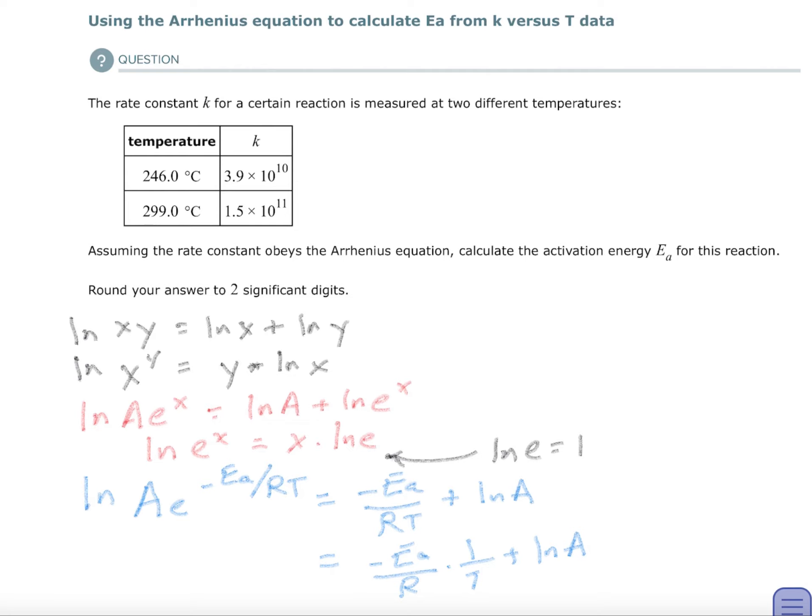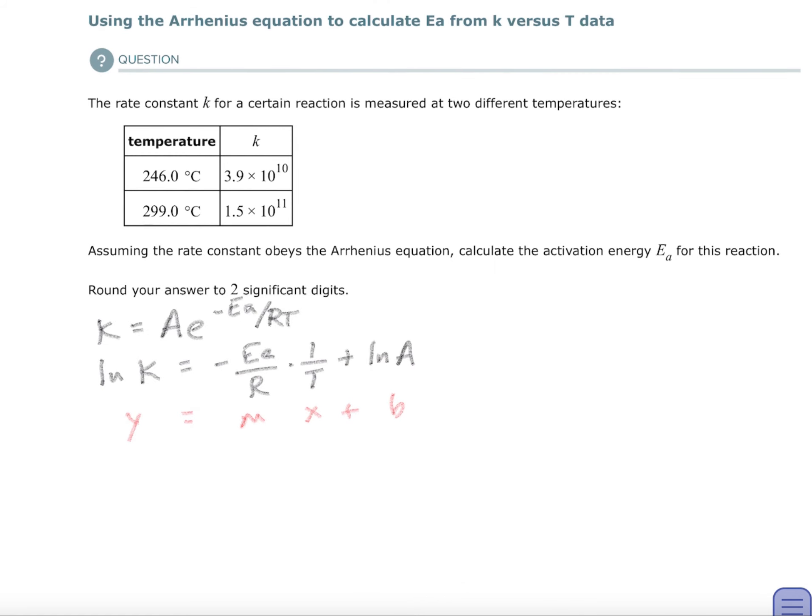So in any case, what you're going to do is you're going to take the natural log of the Arrhenius equation on both sides. So that's what I've done here. Here's the Arrhenius equation at the top.